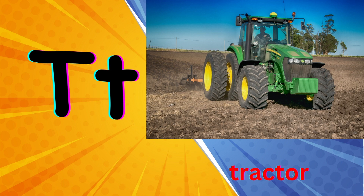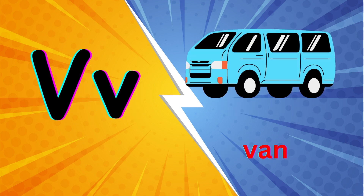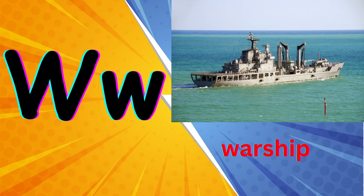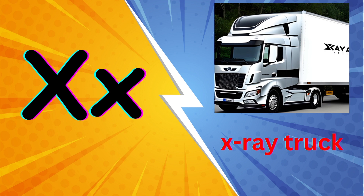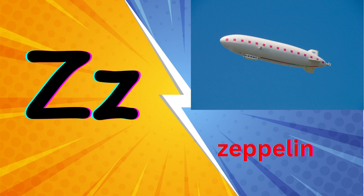U for unicycle. V for van. W for warship. X for x-ray truck. Y for yacht. Z for zeppelin.